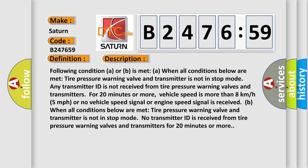And now this is a short description of this DTC code. Following condition A or B is met when all conditions below are met. Tire pressure warning valve and transmitter is not in stop mode. Any transmitter ID is not received from tire pressure warning valves and transmitters for 20 minutes or more.